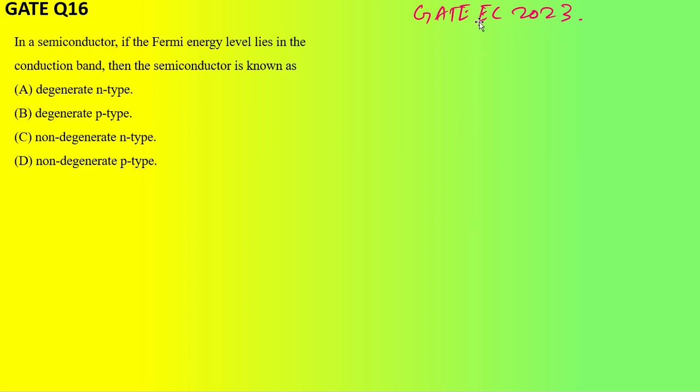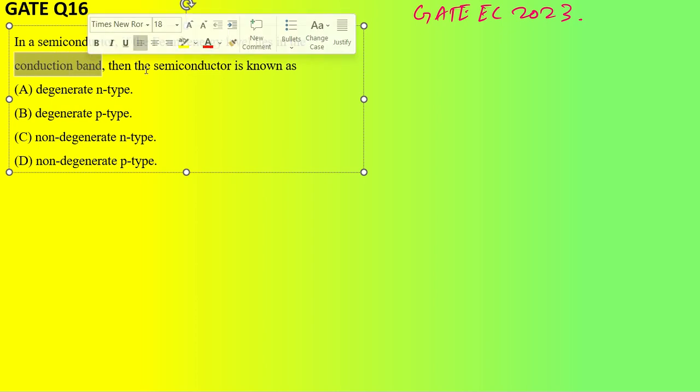Hello, this is a question from EC Gate 2023 from electronic devices. In a semiconductor, if the Fermi energy level lies in the conduction band, then the semiconductor is known as...